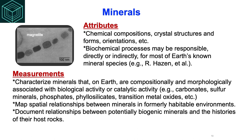Minerals are another biosignature category. We're interested in chemical compositions, crystal structures and forms, and orientations. An interesting point raised by Bob Hazen is that biochemical processes may be responsible directly or indirectly for most of Earth's known mineral species. It would be very interesting to see the extent to which Mars would address that potential, but that's why we have to go make the measurements. The measurements would characterize minerals that on Earth are compositionally or morphologically associated with biological or catalytic activity — preservers like carbonates, sulfur minerals, phosphates, and phyllosilicates, but also transition metal oxides that might have characteristic signatures like those magnetite crystals. We would map spatial relationships between minerals in formerly habitable environments and document relationships with the histories of the source rocks.